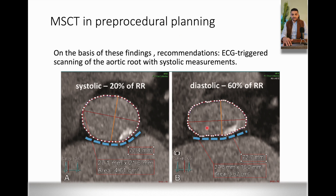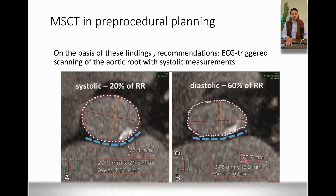This is proven by the image shown here — the same patient with the same calcifications. The systolic phase is from 0 to 40%, triggered at 20% of the RR interval. The diastolic phase is from 40 to 100%, here at 60% of the RR interval. The perimeter measured in systole is 77.4 millimeters, while in diastole it is 72 millimeters. This proves that the annulus measurement in systole is bigger than in diastole, which is why we measure in systole.